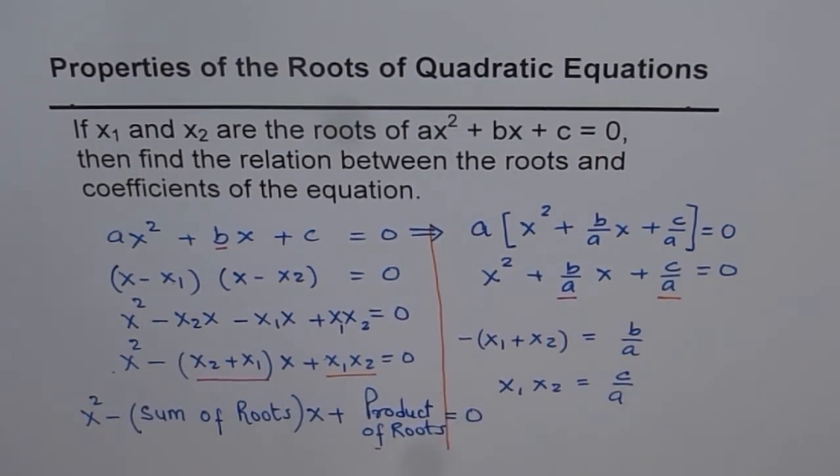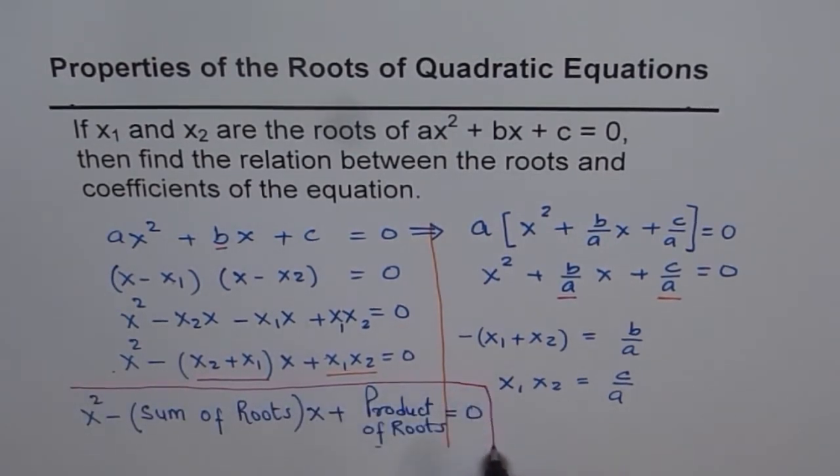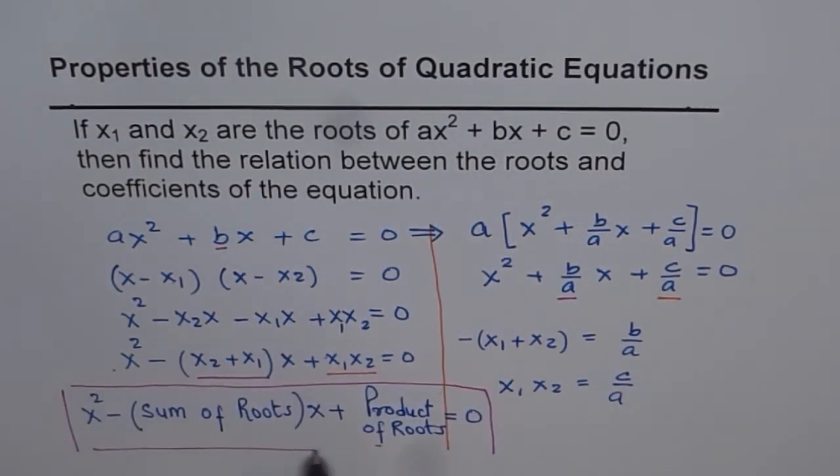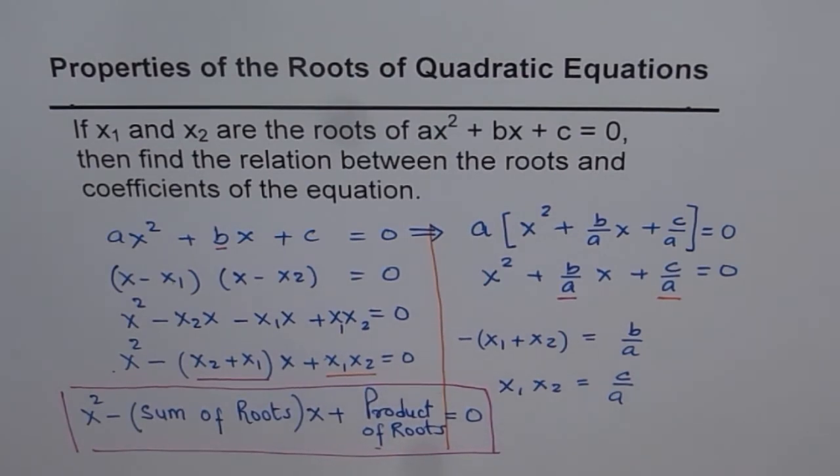So that becomes our equation, correct? So let me just highlight this equation here. So we basically get an equation like x squared minus sum of roots times x plus product of roots equals 0 if we are given the roots.